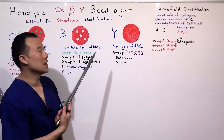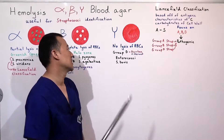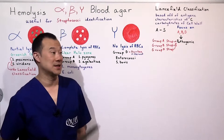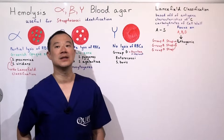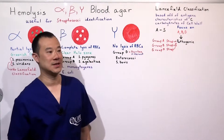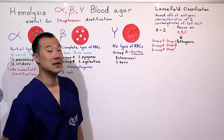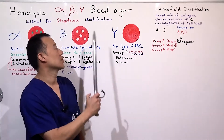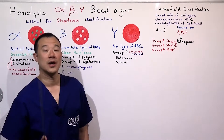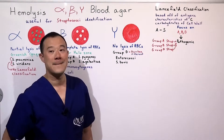Gamma hemolysis is no lysis of red blood cells. This group is Group D Streptococcus. Group D for diarrhea — these streptococcus cause diarrhea. Group D for different, because these streptococcus are different; they are usually enterococci of the streptococcus genus. S. bovis is also a Group D or gamma hemolytic bacteria.